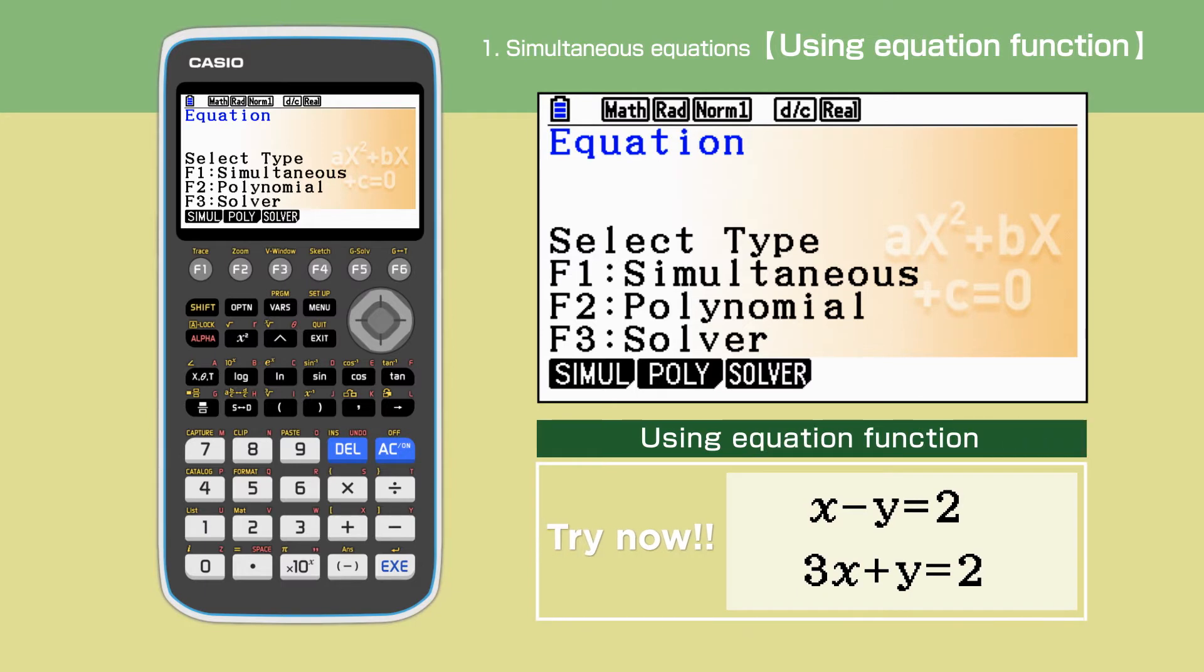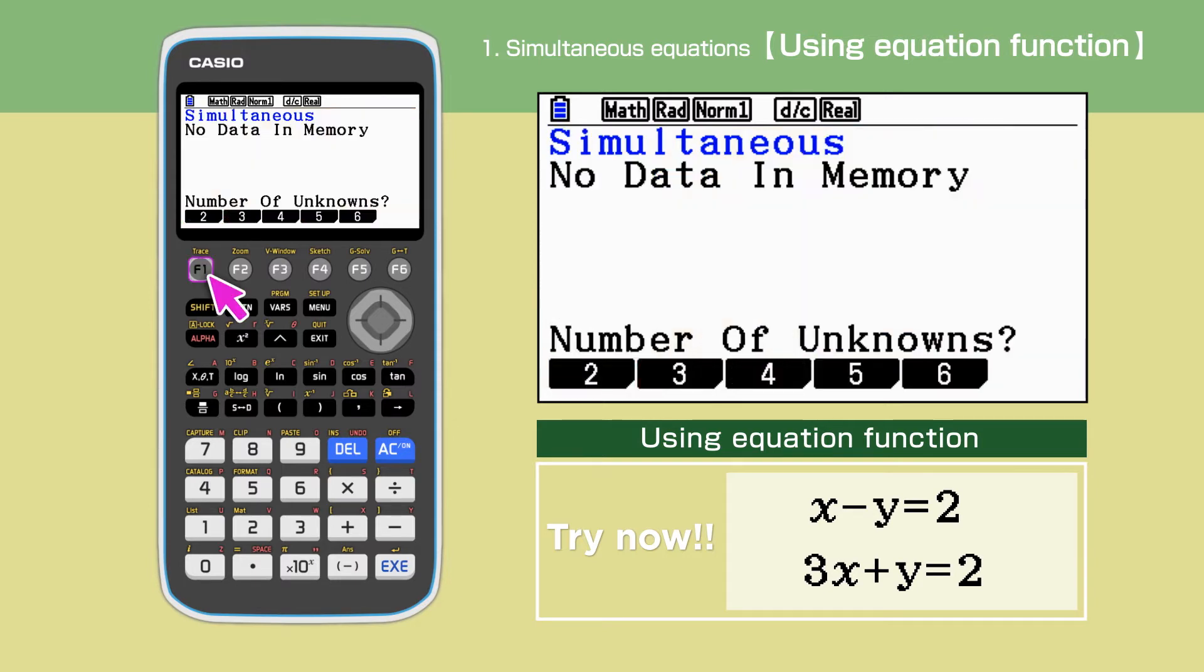First, we will solve simultaneous equations with two unknowns. Press F1 to select simultaneous, then press F1 to select two unknowns.